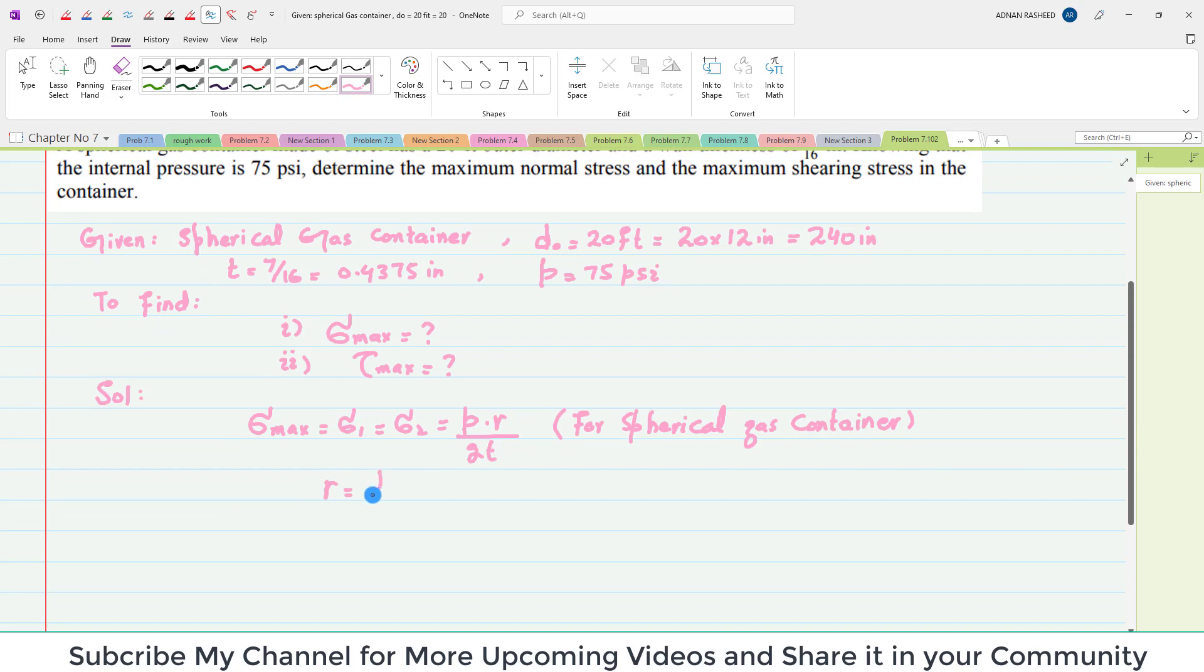So, (1/2)(240 inch) minus 0.4375 inch. We will get R equals 119.56 inches.